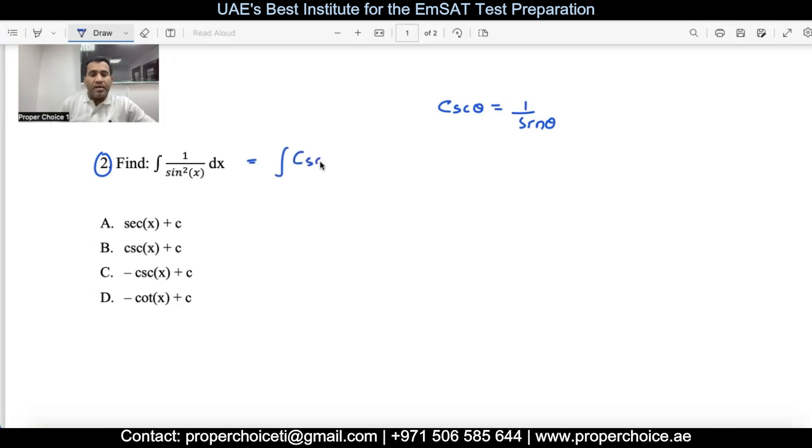What is the integral of csc²x dx? If you remember the derivative and integral relation, this equals -cot x + c. For indefinite integrals, we always write +c because c represents some constant. The integral of csc²x dx is -cot x + c, so we go with option D.